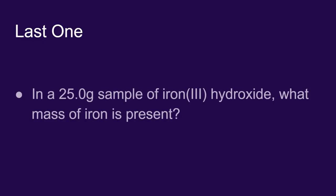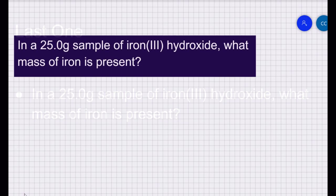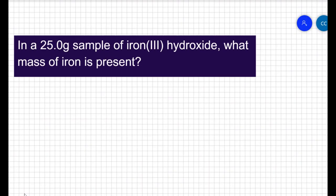Let's do one final example. If I have a 25 gram sample of iron 3 hydroxide, I want to know what mass of iron is present. First let's figure out what iron 3 hydroxide is. Iron has a plus 3 charge. Hydroxide is OH with a minus 1 charge, so the compound is Fe(OH)3. If I have one iron, three oxygens, and three hydrogens, I get a molar mass of 106.866 grams per mole.